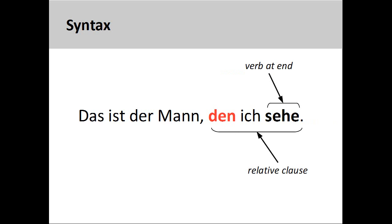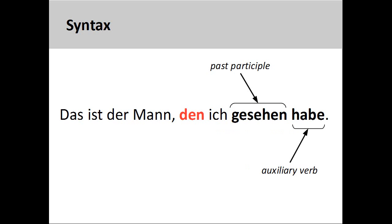Second, since relative clauses are a type of subordinate clause, the conjugated verb needs to be moved to the very end of the clause. Here the verb "sehe" comes at the very end of the relative clause. In the case where other verb elements are present in the sentence, such as when you form the present perfect tense, the conjugated auxiliary verb still comes at the very end of the clause. In the sentence "das ist der Mann, den ich gesehen habe" (that is the man whom I have seen), the conjugated verb comes at the very end of the sentence, right after the past participle "gesehen."